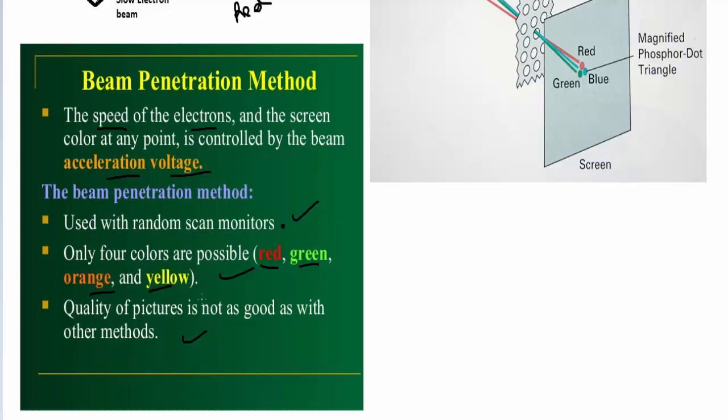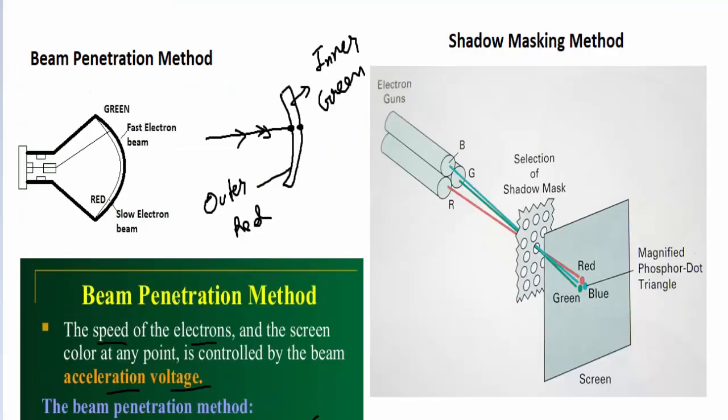The next method is known as the shadow masking method. Basically, the electron gun consists of three guns: blue, green, and red. The electron beams will generate, and there is a shadow mask, also known as metal sheet. This is used for controlling the intensity of the electron guns.